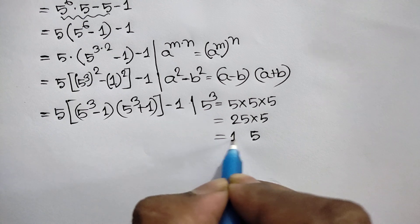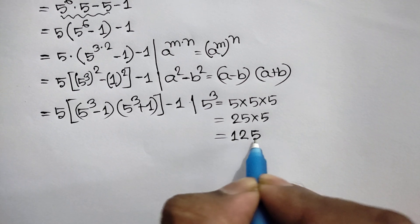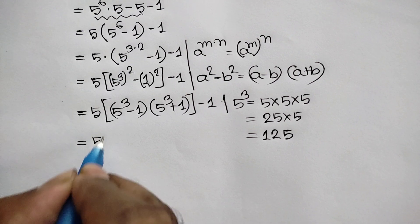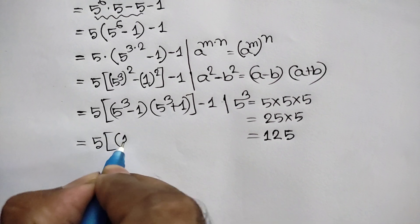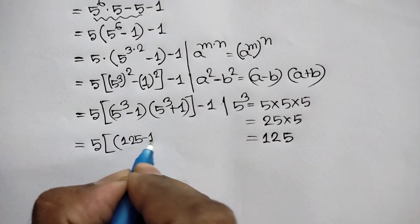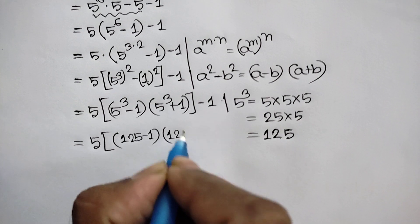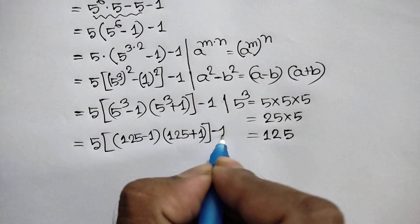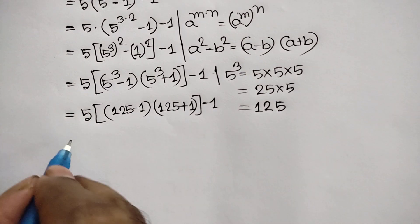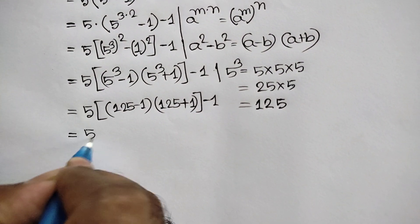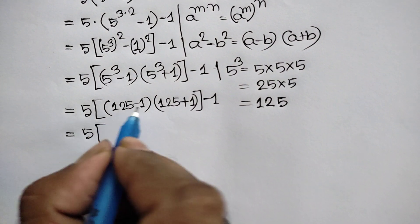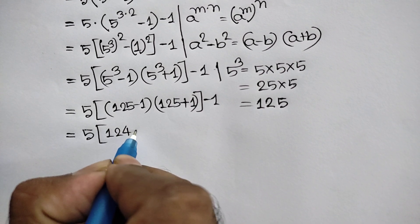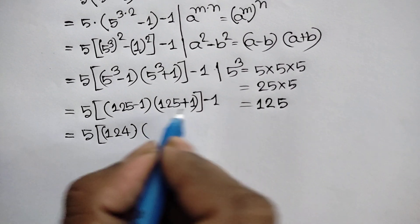So we can write here 5 times 125 minus 1 times 125 plus 1, and this negative 1. This equals 5 times 124 times 126, and this negative 1.